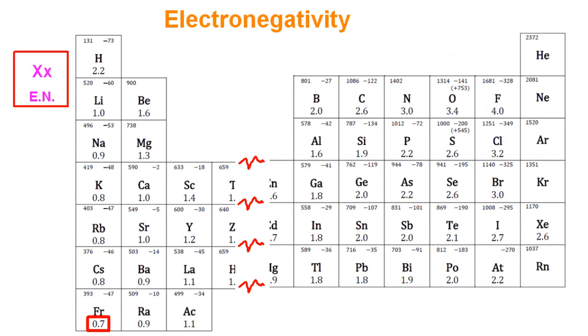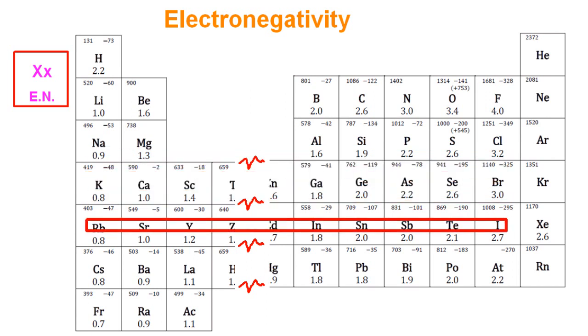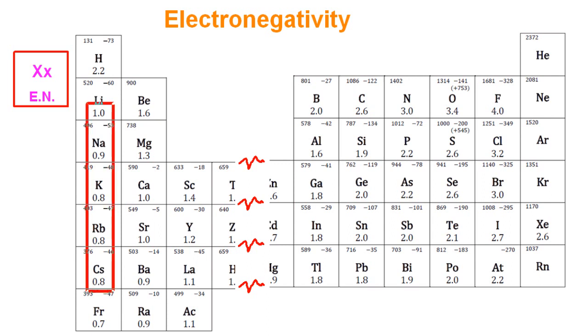Francium has the lowest electronegativity and if you look at the trend across a period electronegativity increases across the period. The IB is not going to ask you about any minor discontinuities for this. And as you go down a group electronegativity decreases. So you need to remember those two trends.